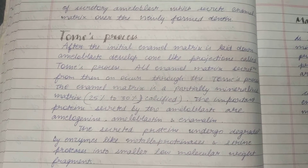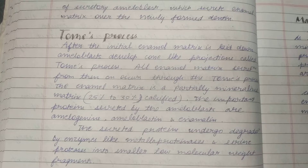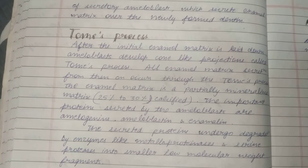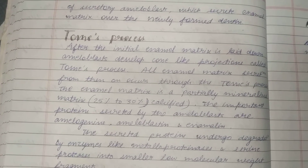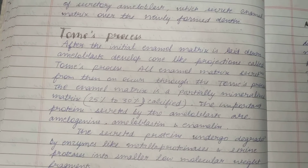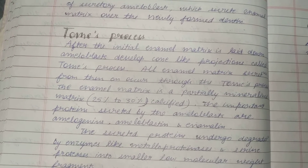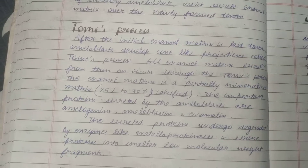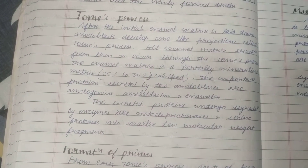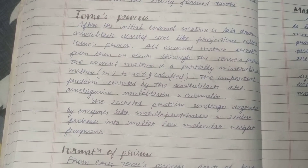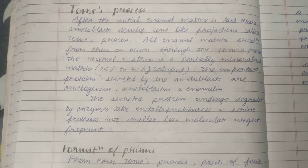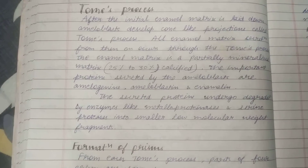The enamel matrix is a partially mineralized matrix, which is 25–30% calcified. The important proteins secreted by ameloblasts are amelogenins, ameloblastin, and enamelin. These secreted proteins can be degraded by enzymes like metalloproteinases and serine proteases into small, low-molecular-weight fragments.